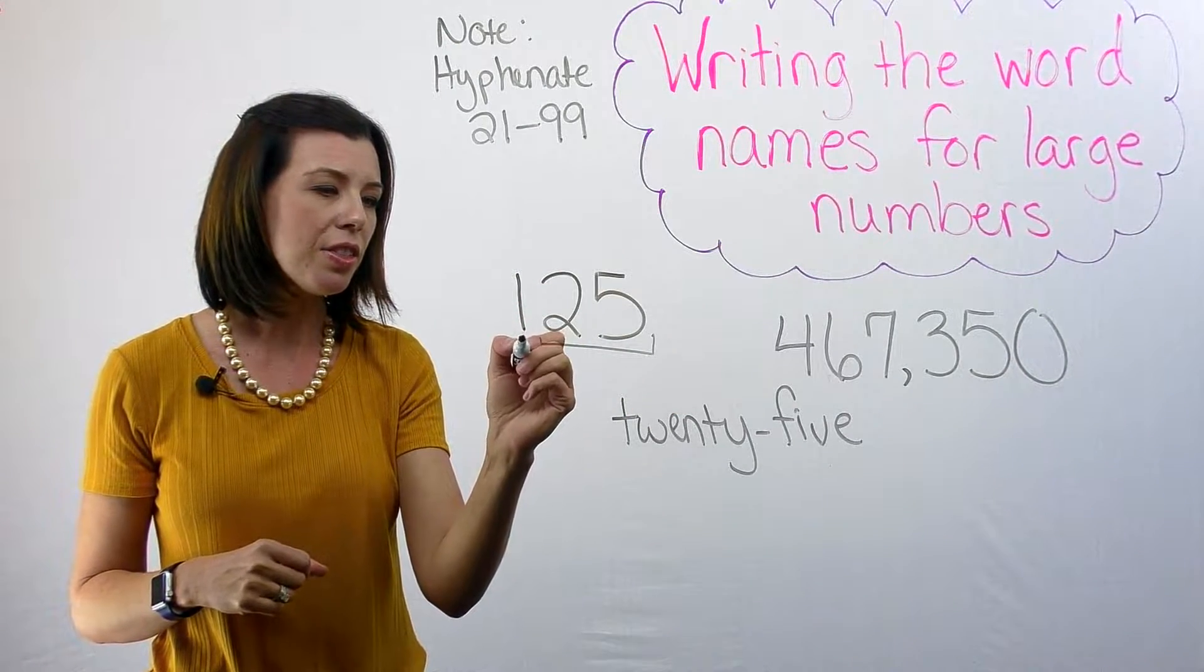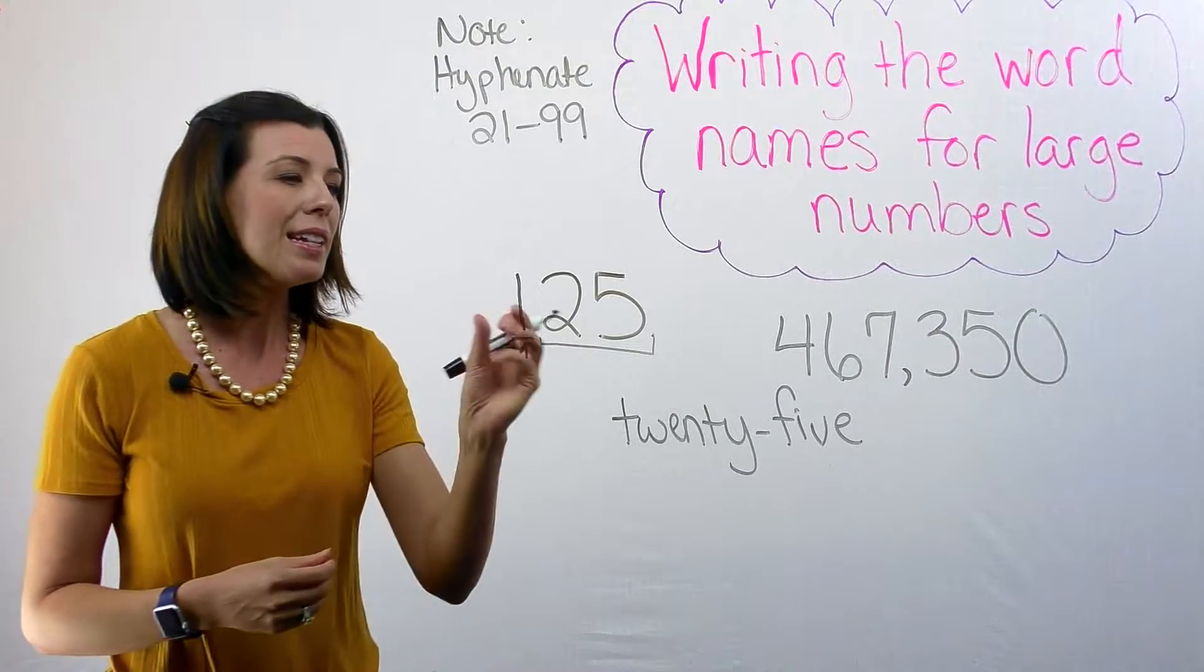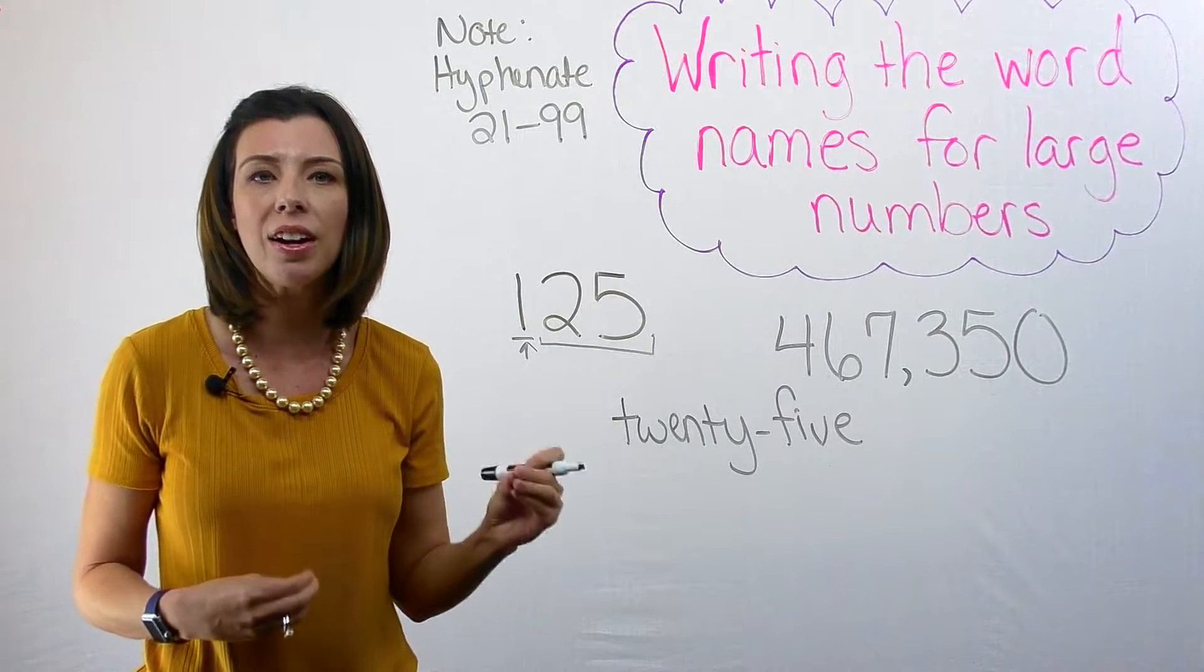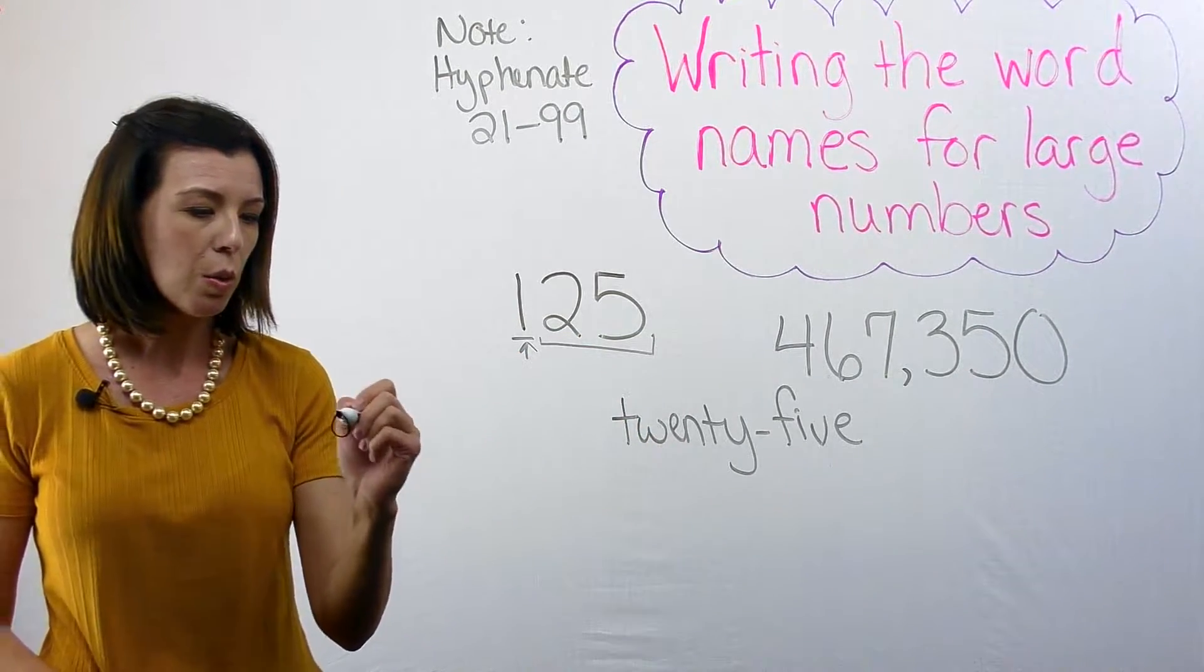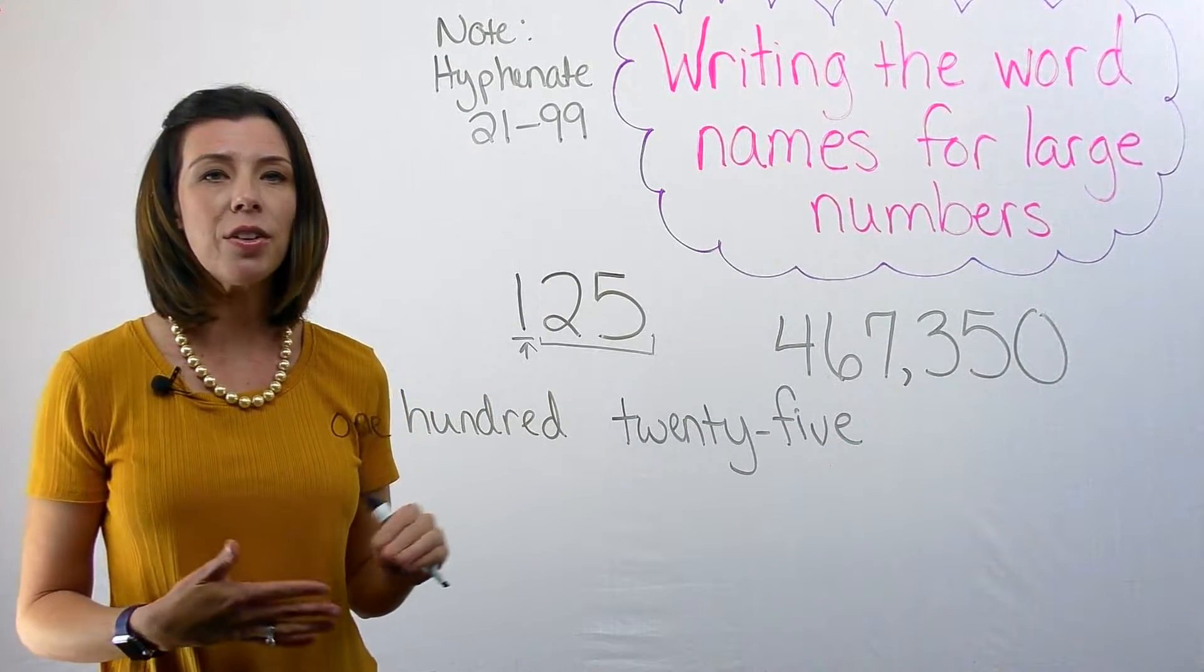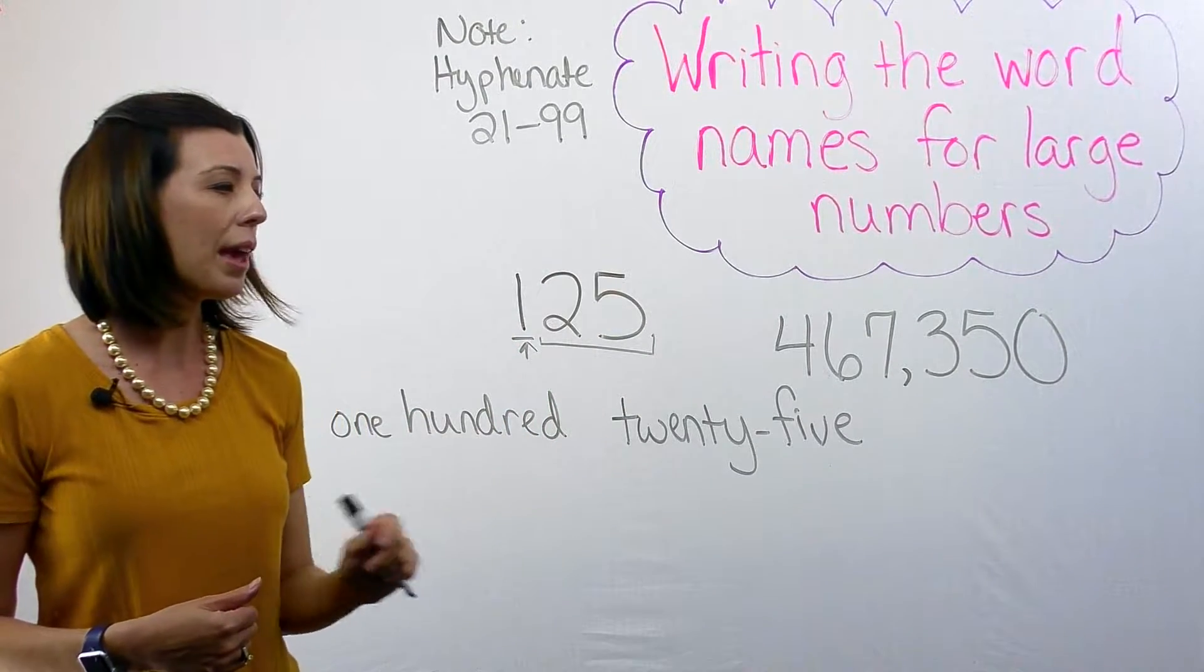And I know that this digit right here, the digit of one or the number one tells me that I have 100. It tells me how much of that hundreds chunk I have. So my final answer is going to be 125. Notice that I don't have any commas because I have no commas in my number.